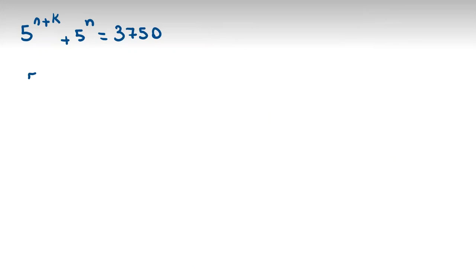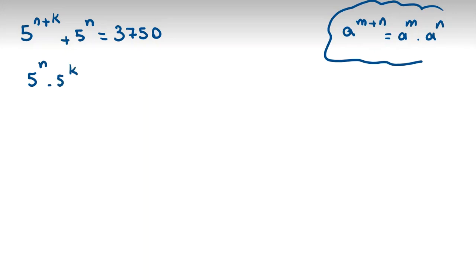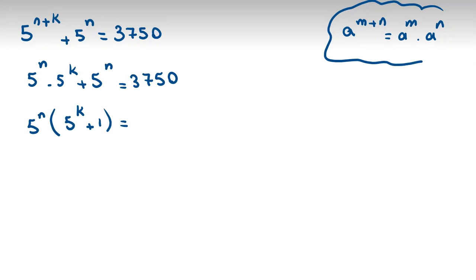We use the power rule: 5^(n+k) equals 5^n times 5^k. Factoring out 5^n, we get 5^n times (5^k plus 1) equals 3750. Now, 5^k plus 1 is not a multiple of 5: if k is 0 it equals 2, if k is 1 it equals 6, and for k greater than or equal to 1 the remainder when divided by 5 is 1. So 5^k plus 1 is never a multiple of 5. This means we need to prime factorize 3750.